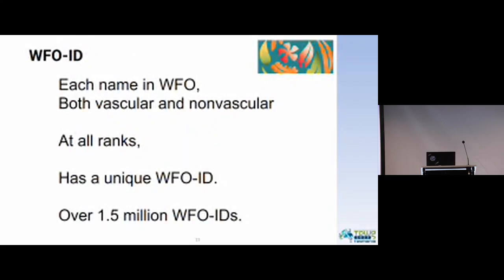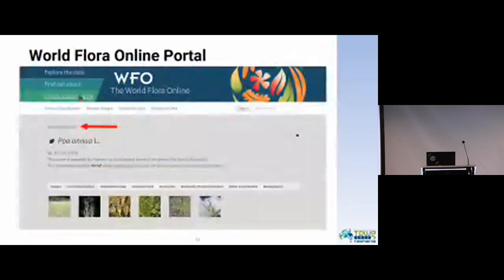Each name in the WFO, both vascular and nonvascular plants at all ranks, has a unique WFO ID, and we have over 1.5 million WFO IDs now. If you go to the World Flora Online portal by searching for a name, you can find a name — for instance, like Poa annua here. This is a page for Poa annua, and you can see it shows the WFO ID right there.